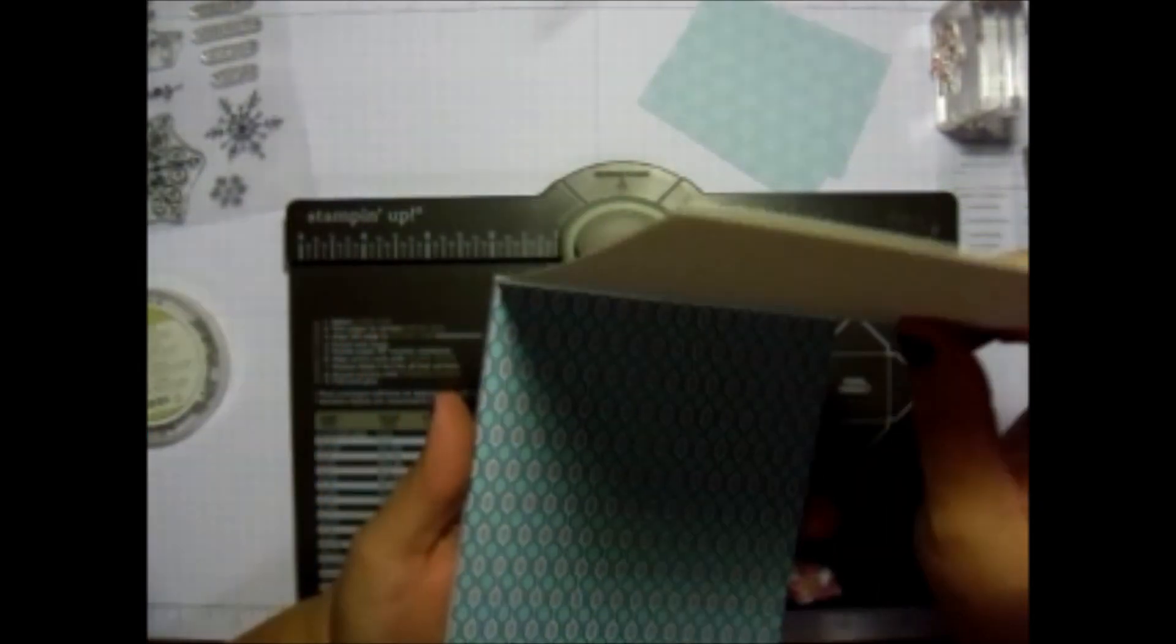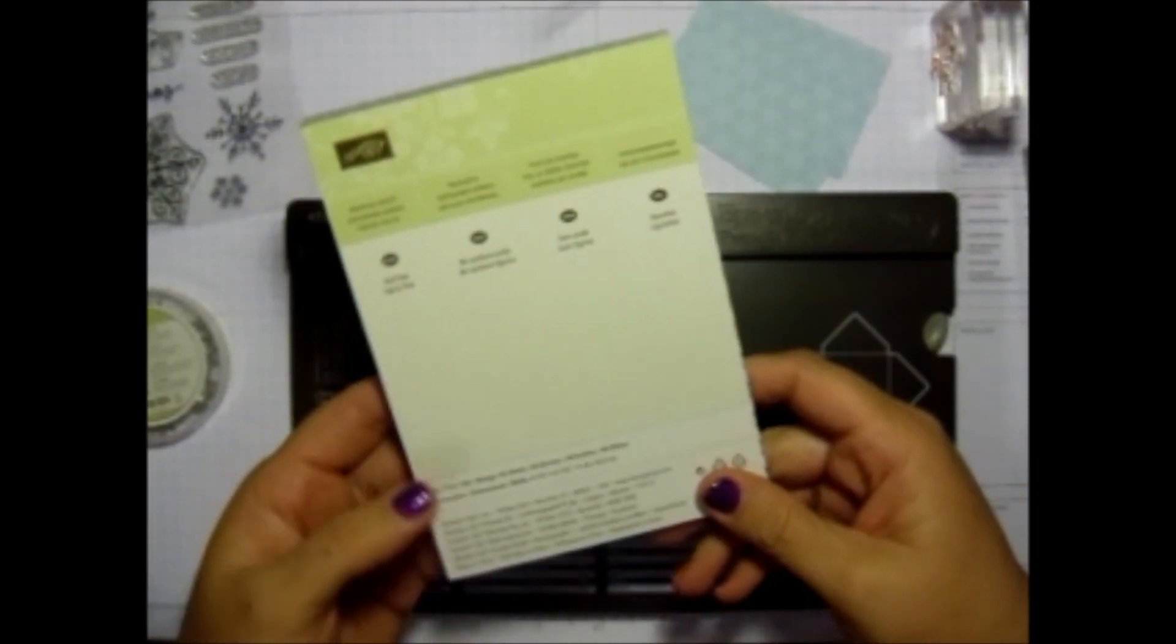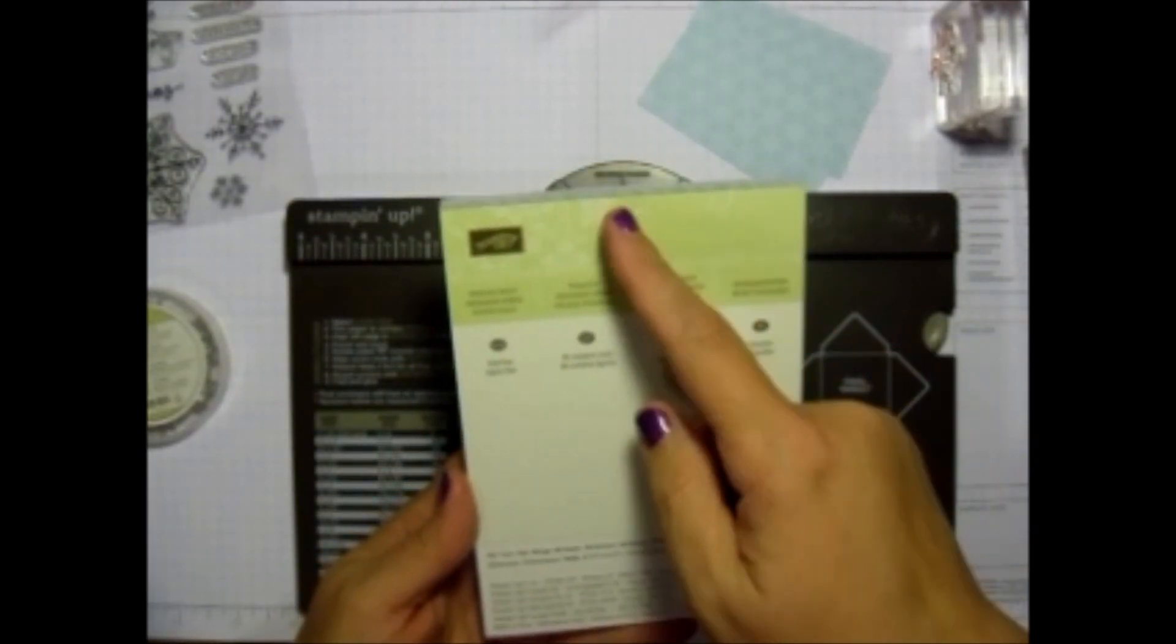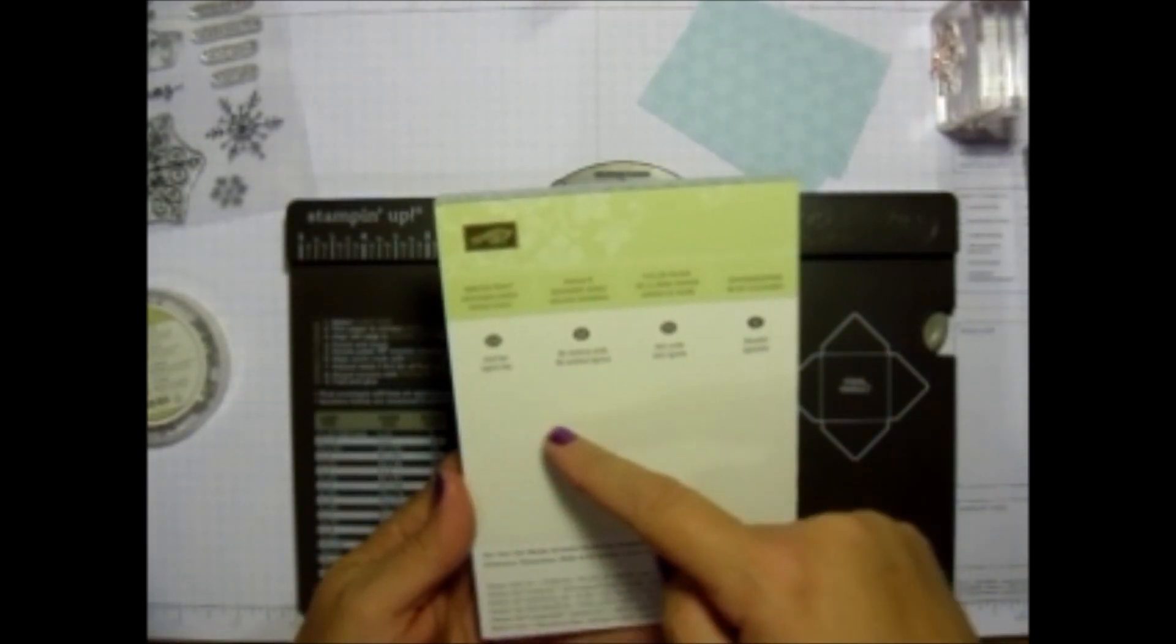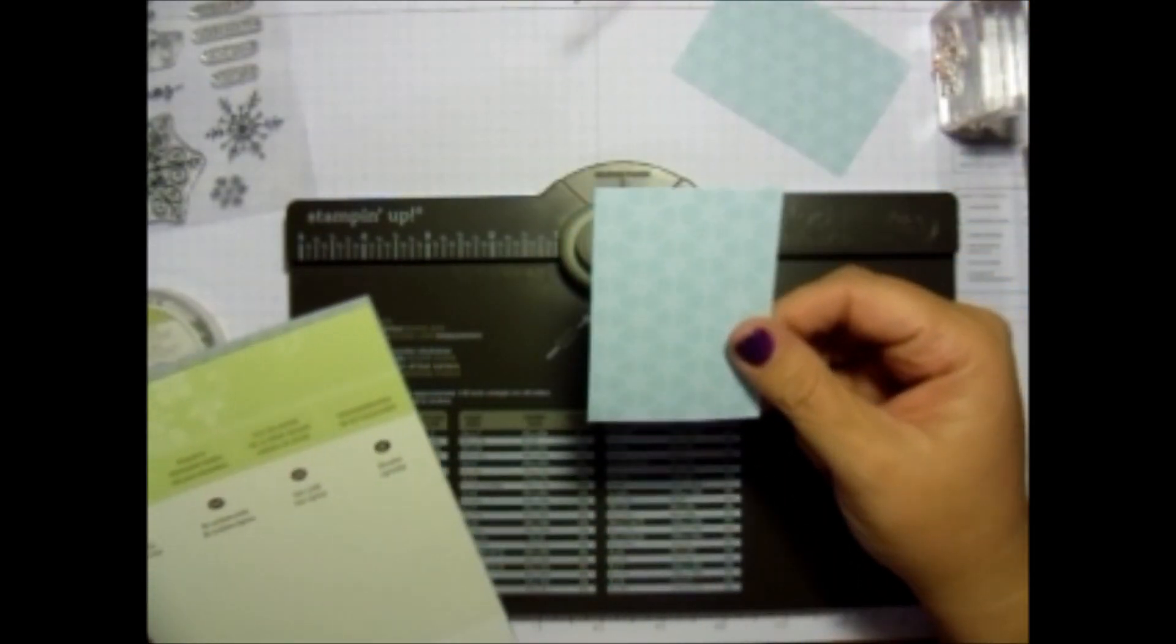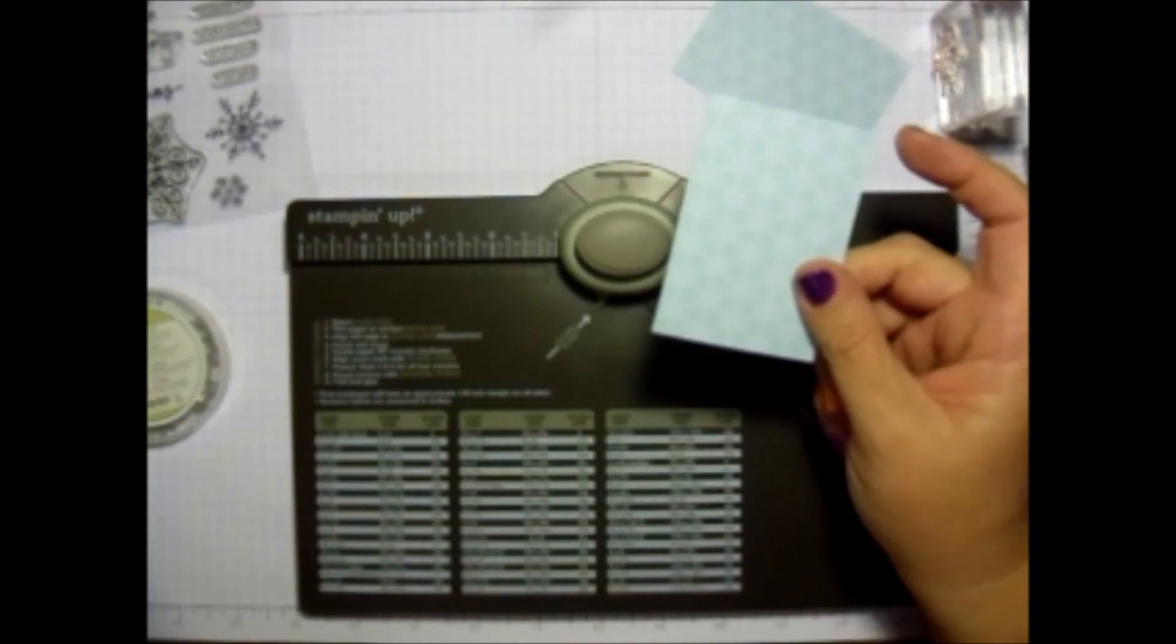What I did is I took one of the sheets of paper here and they measure four and a half by six and a half. So what I did is I took and I cut it in half and I cut it in half. So you're going to get four sheets of two and a quarter by three and a quarter. So this is what I ended up with.